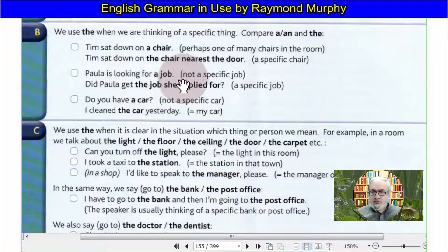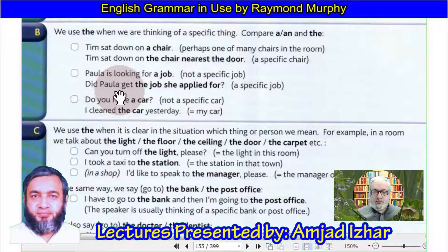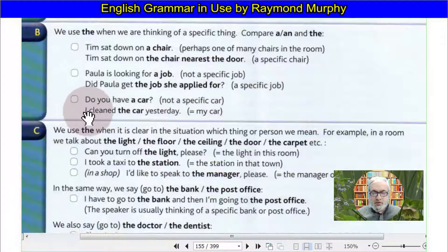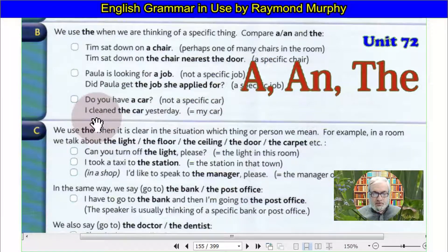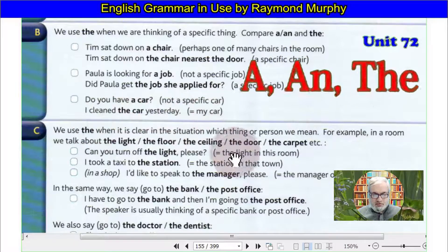Fiona is looking for a job — not a specific job. 'Do you have a car?' — not a specific car. 'I hired a car' — used to be my car.